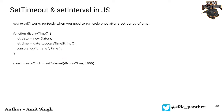Now let's talk about setInterval. We've seen that setTimeout runs once after a particular time span, but setInterval runs repeatedly every time a particular interval elapses. For example, if we provide 1000 milliseconds as the second parameter, the method will run multiple times — every 1000 milliseconds — until you clear it. Everything else is the same as setTimeout; only the name of the method is different.